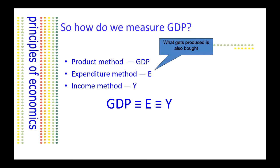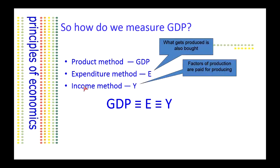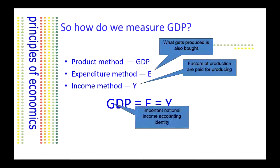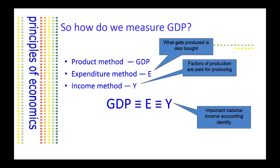The income method relies on the idea that in order to produce the GDP, we need factors of production — labour, land, capital, and entrepreneurship — and the owners of those factors of production are going to be paid an income: wages, rents, interest, and profits, in order to get those factors to do the job of production. This gives us a three-way equality: GDP is exactly equal to spending, and that is exactly equal to the income generated in producing GDP.